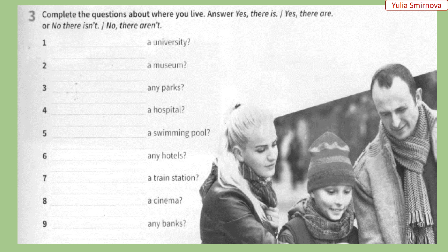Exercise number three. Complete the questions about where you live and answer yes or no. Вправа третя — завершіть питання про те місце, де ви живете, і дайте відповіді так чи ні. 1. Is there a university? No, there isn't. — Чи є там університет? Ні, немає. Якщо ж у вашому місці є університет, ви будете відповідати: Yes, there is. 2. Is there a museum? Yes, there is. — Чи є там музей? Так, є.